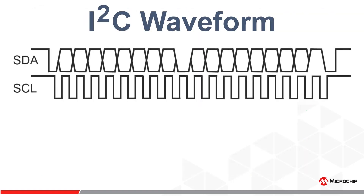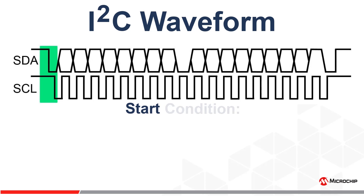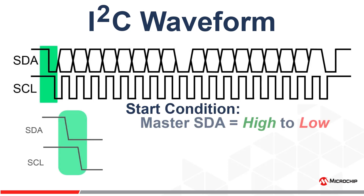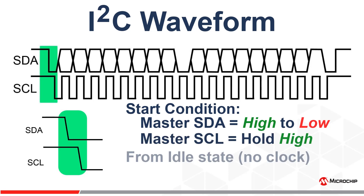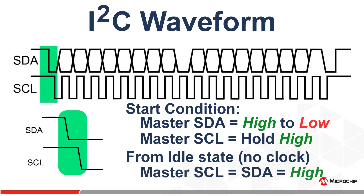Next, let's look at an I2C waveform. At first, the waveform might look a bit complex, but if we break it down into sections, it will become much easier to decode. All I2C transactions are initiated with a start condition. The start condition is defined as the master driving the SDA line low to a logic 0 while SCL remains high. It must be initiated with the I2C bus in an idle state, meaning the SDA and SCL lines are both high, or a logic 1.